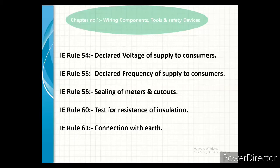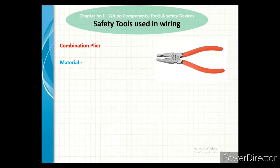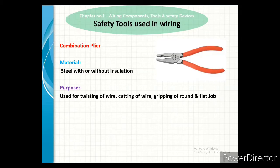In this session, we covered the different Indian legislative rules of safety. We now move to the next session on safety tools. Our first safety tool is the combination plier. The material used is steel, with or without insulation. The purpose of a combination plier is primarily for twisting of wire, cutting of wire, and gripping of round and flat jobs.